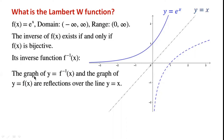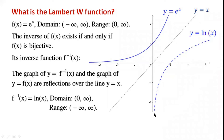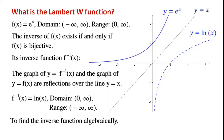Geometrically, the graph of y equals the inverse of f(x) and the graph of y equals f(x) are reflections over the line y equals x. So y equals ln(x) is a reflection of y equals e^x over the line y equals x. The domain of the inverse is from 0 to infinity, and the range is from minus infinity to infinity.